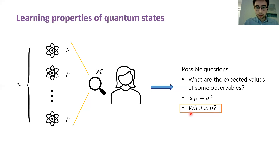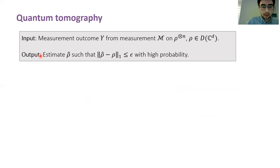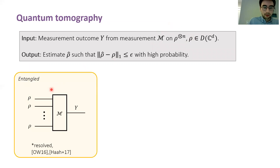Let me be a little bit more precise about what I mean by quantum state tomography. Here we suppose that we're given some input, which is a measurement outcome from some measurement performed on n identical copies of an unknown d-dimensional quantum state. Our task is to output an estimate rho-hat that's epsilon-accurate in trace distance with high probability, and ideally we'd like to do this using as few copies of the state as possible. In the most general case, you're allowed to perform a joint measurement on all the registers simultaneously and then use that outcome to infer what the state is.